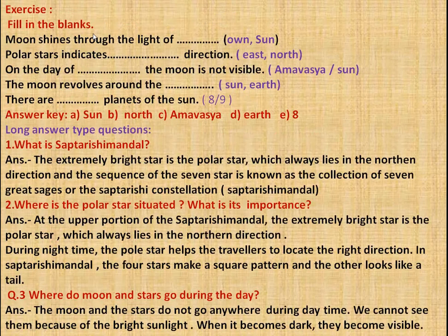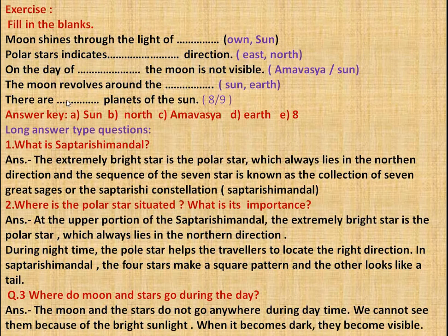Exercise — Fill in the blanks. Moon shines through the light of the Sun. Polar star indicates the northern direction. On the day of Amavasya (dark moon), the moon is not visible. The moon revolves around the Earth. There are 8 planets in the solar system.